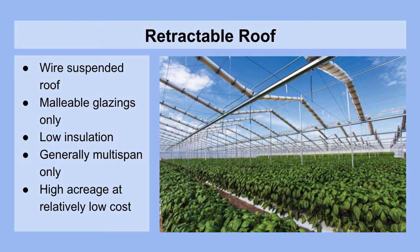The retractable roof greenhouse is an interesting solution in some places. It features a wire suspended roof with only malleable glazings that can be pulled on steel cables and open and close over the course of just a few minutes. They usually have very low insulation capacity and are also normally multi-span. This is a good solution for very high acreages that you want to cover at a low cost, perhaps for increasing the productivity of soil or field production crops.